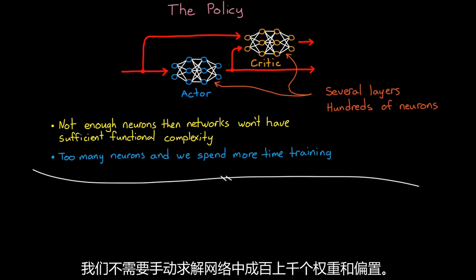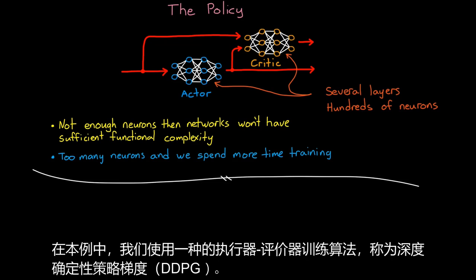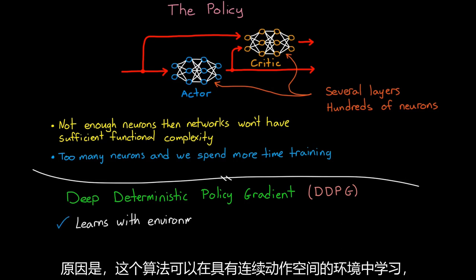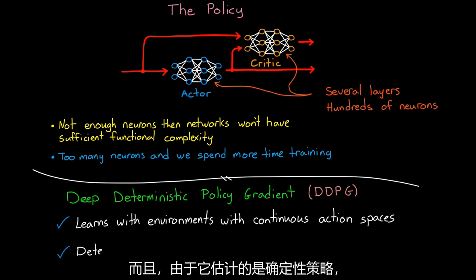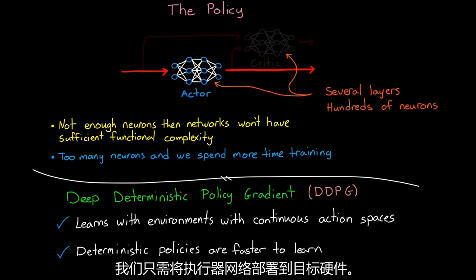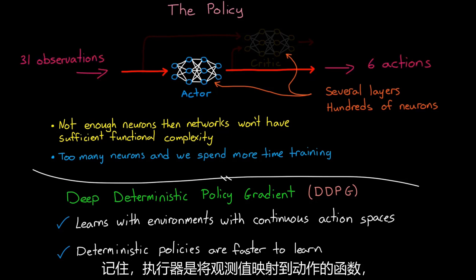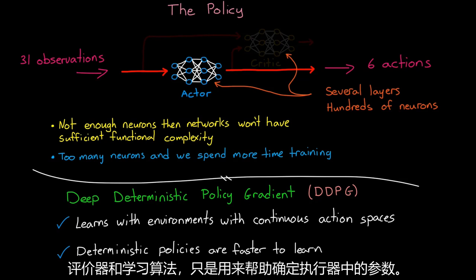Luckily, as we know, we don't need to manually solve for the hundreds of thousands of weights and biases in our networks. We let the training algorithm do that for us. In this example, we're using an actor-critic training algorithm called the Deep Deterministic Policy Gradient, or DDPG. The reason is because this algorithm can learn with environments with continuous action spaces, like we have with the continuous range of torques that we can apply to the motors. Also, since it estimates a deterministic policy, it's much faster to learn than one that learns a stochastic policy. I know this all sounds fairly complicated and abstract, but the cool thing to me about this is that most of the complexity is there for training the policy. Once we have a fully trained agent, then all we have to do is deploy the actor network to the target hardware. Remember, the actor is the function that maps observations to actions. It's the thing that's deciding what to do. It's the policy. The critic and the learning algorithms are just there to help determine the parameters in the actor.